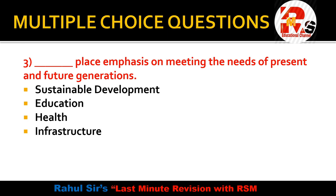Question number 3: Dash places emphasis on meeting the needs of present as well as future generations. The options are: Sustainable Development, Education, Health, or Infrastructure. The right answer is very simple — Sustainable Development places emphasis on meeting the needs of present and future generations.